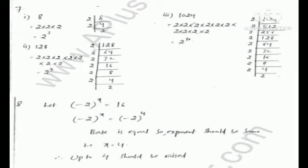In question number 8: to what power should minus 2 be raised to get 16? We need minus 2 to the power x equal to 16. If we write 16 with base minus 2, the power is 4. So minus 2 raised to the power x equals minus 2 raised to the power 4, giving x equals 4.